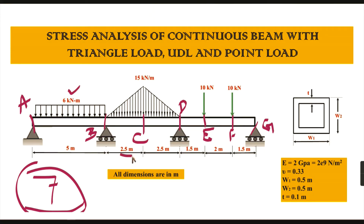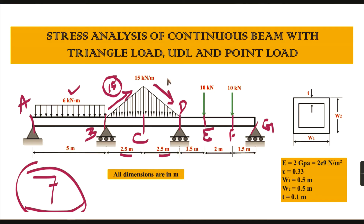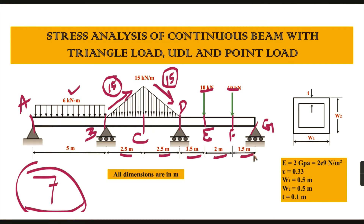The distance between B and C is 2.5 meters, and here it is a varying load — it starts from zero and increases to fifteen kilonewtons per meter. From C to D the distance is also 2.5 meters, and the load decreases from fifteen back to zero — the variation is also fifteen. The distance from D to E is 1.5 meters, and a point load of ten kilonewtons acts there.